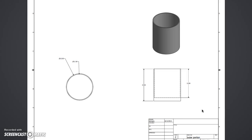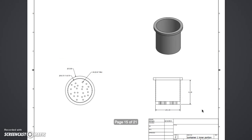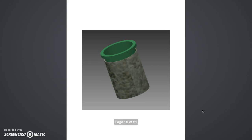Here is a formal drawing for a circular-type container. This shows the outer portion and an inner portion. The inner portion has perforations at the bottom for water drainage. The assembly shows how the inner portion fits into the outer portion to contain the water drainage.